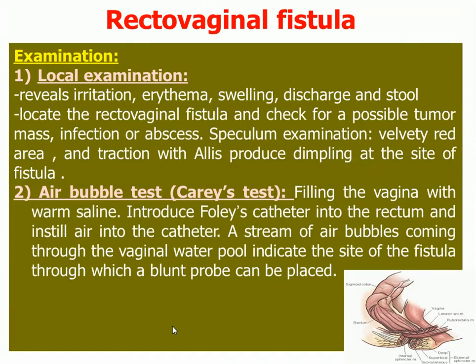On examination, local inspection reveals signs of irritation, erythema, swelling, discharge, and stool coming from the vagina. You can locate the rectovaginal fistula and check for a possible tumour mass, infection, or abscess. Speculum examination reveals a velvety red area and traction with Alice forceps produces dimpling at the site of the fistula. The carous test — an air bubble test — is done by filling the vagina with warm saline, then introducing a Foley catheter into the rectum and instilling air. A stream of air bubbles through the vaginal water pool indicates the site of the fistula.